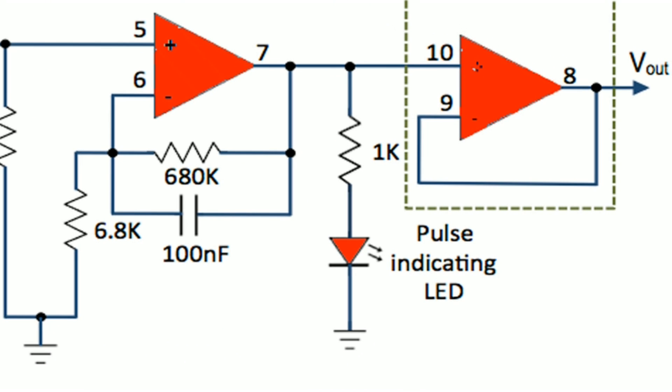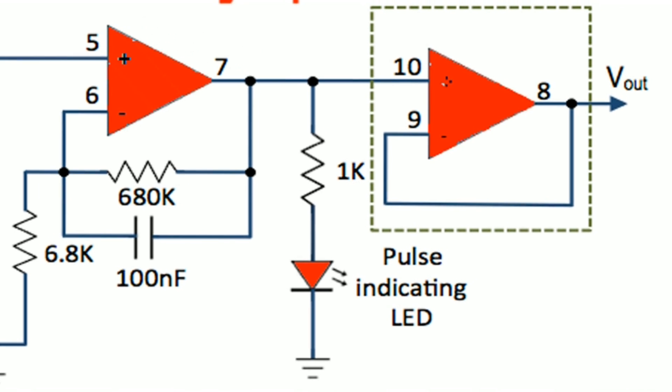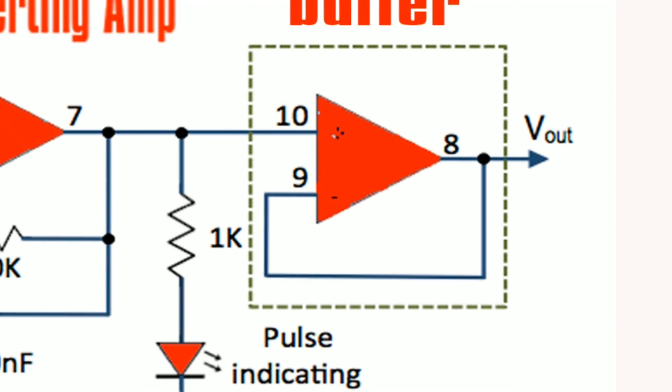At the output of the first amplifier, we will get the output. The LED will blink according to our heartbeat. But if we want to feed this signal to a controller, we need to attach an additional buffer amplifier.